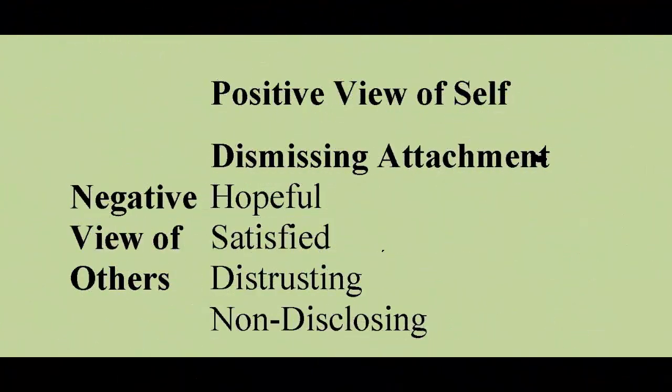The next attachment type is dismissing attachment. These individuals tend to have a positive view of self but a negative view of others. They tend to be hopeful and satisfied with who they are, but they're distrusting and non-disclosing toward others. While they're comfortable in their own skin, they don't really trust the outside world. These folks often remove themselves from social situations, either not caring about others or giving the presentation that they don't — with a strong emphasis on themselves.